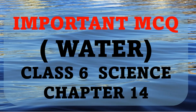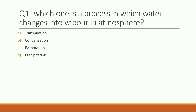First question: which one is a process in which water changes into vapor in the atmosphere? The options are transpiration, condensation, evaporation, or precipitation. The right answer is evaporation — evaporation is the process in which water changes into vapor and goes up into the atmosphere.